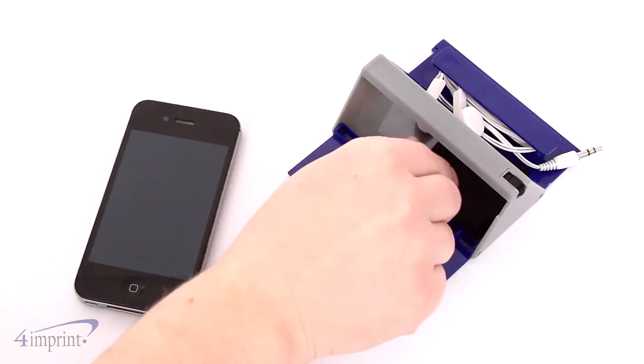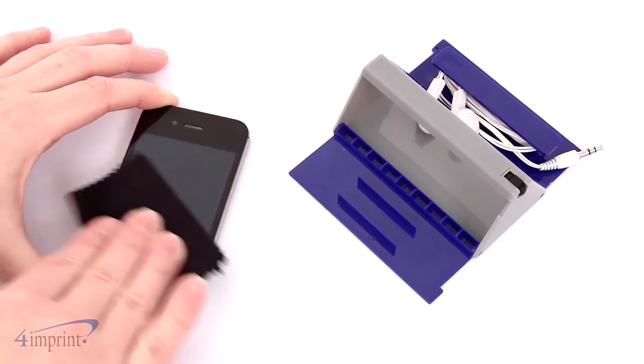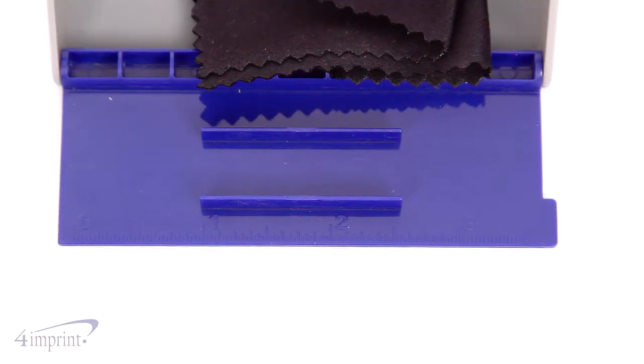Placed inside, you'll find a screen cleaner to help you remove smudges and fingerprints on your mobile device. There's also a three and a half inch ruler located on the drop down panel that features the media stand.